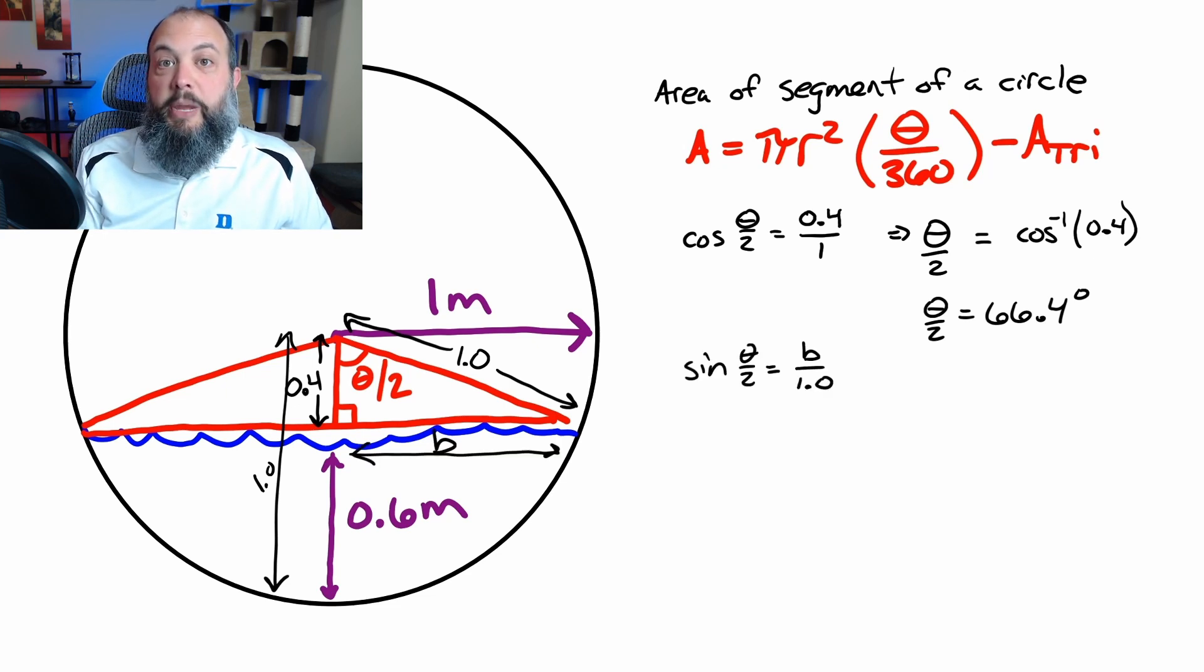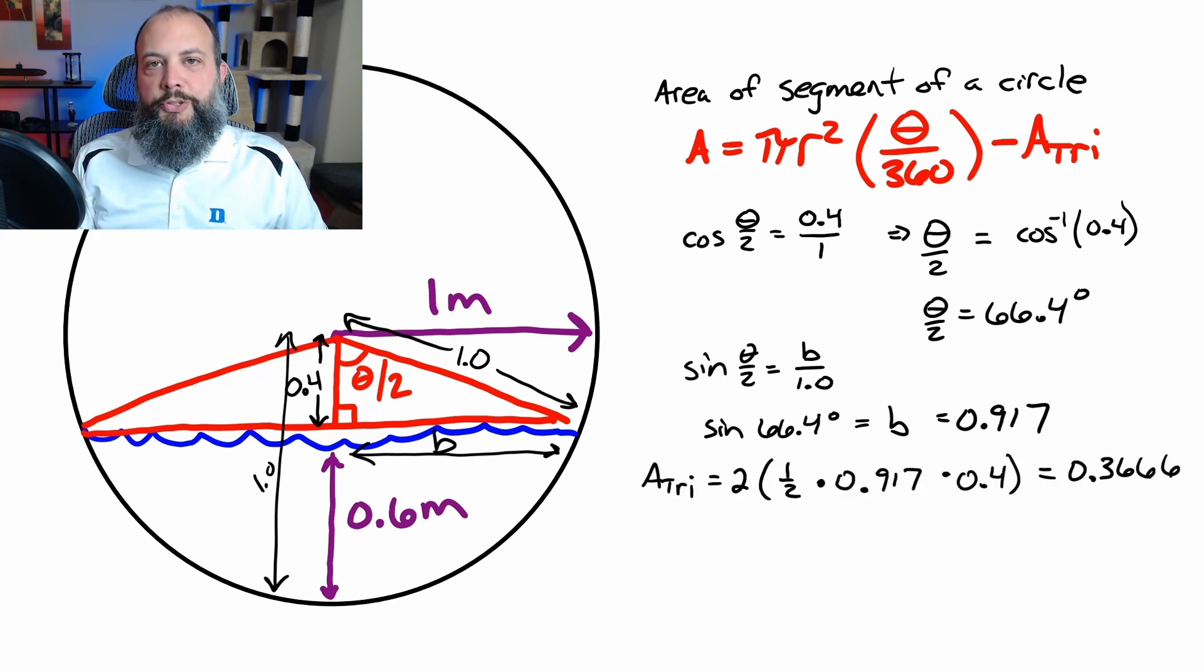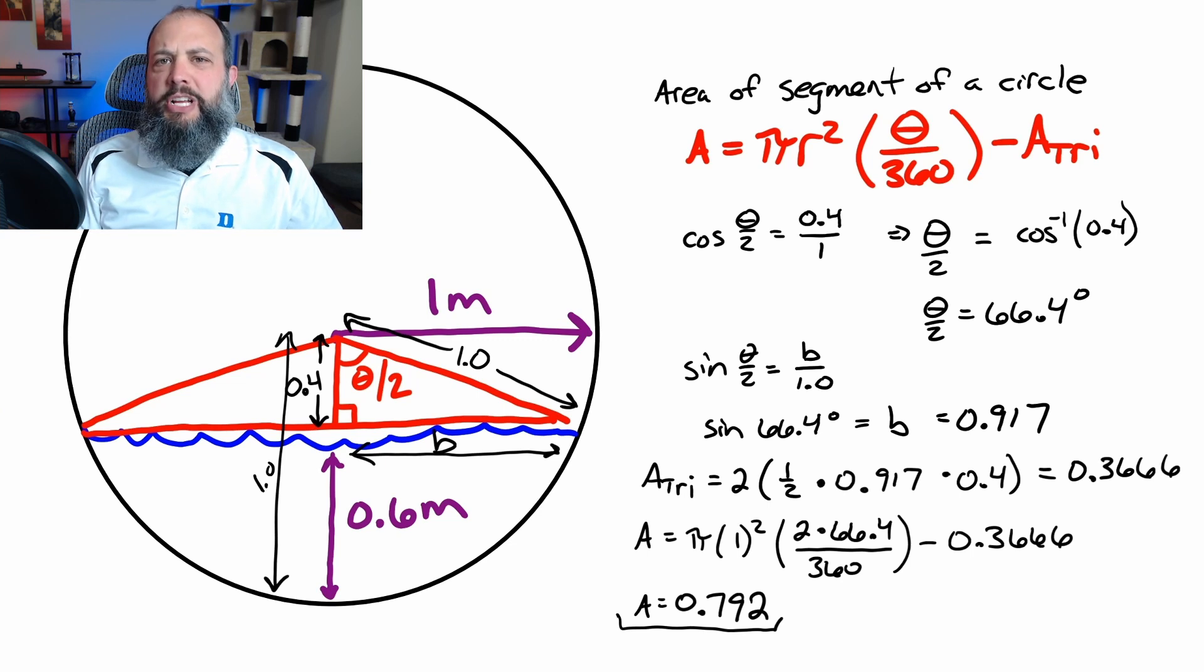Rearranging, we get that this angle θ/2 is 66.4 degrees. To find the area of that triangle we'll need to find the base of the triangle, which we can get with sine since the base is opposite that θ/2 angle. So that horizontal distance of the triangle is 0.917 meters. So the total red triangle, that is both of the small right triangles together, is 0.3666, so I get an area of about 0.8. As a double check to make sure this makes sense, the area of the whole circle is going to be π, so 3.14. This 130 degree pie wedge is about one third of that circle, so that would be an area of about 1.05 in the entire wedge. And then after subtracting some part for the triangle, a value of 0.8 seems to be about right.